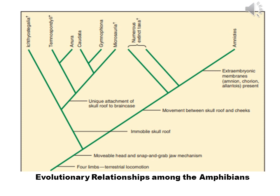The non-amniotic lineage refers to organisms whose eggs have no amniotic layer, and they lay their eggs only in water. In contrast, the amniotic lineage refers to tetrapods whose eggs have an amniotic layer, allowing them to lay eggs on land rather than in water.